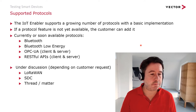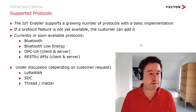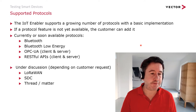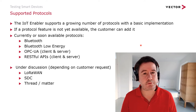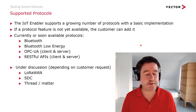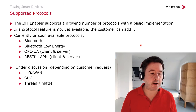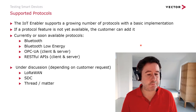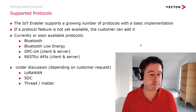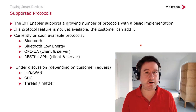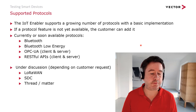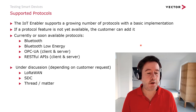Currently available protocols include Bluetooth, Bluetooth Low Energy, OPC UA — supported both client and server side — and a RESTful API also for client and server side. Currently under discussion, depending on customer requests, are LoRaWAN support, SDC support from the medical sector, and Thread support — an upcoming protocol for home automation.